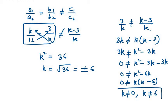That means k is not equal to 0 and k is not equal to 6. So we have two values here: plus 6 and minus 6.